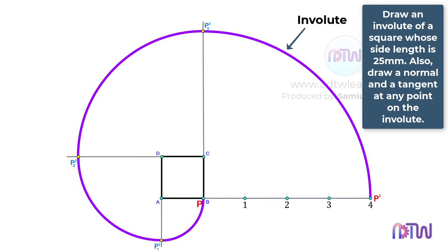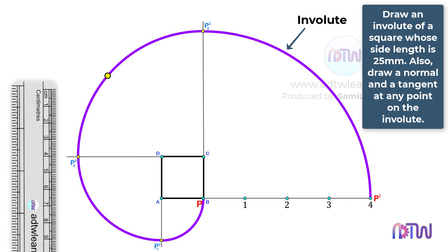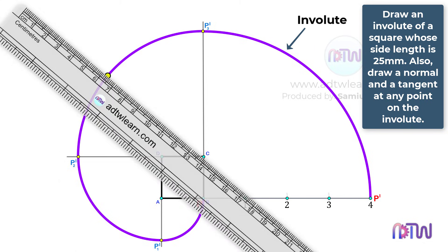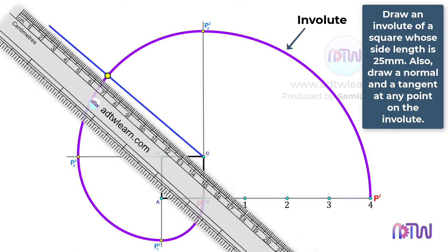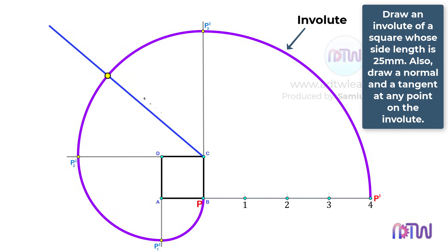We need to draw a tangent and a normal at any point on this curve. Suppose we want to draw a tangent and a normal at this point. Take a ruler and using this point as a reference, draw a line up to point C. This line will be the normal at this point. After this, draw a perpendicular line to this line, which will be the tangent to this curve.